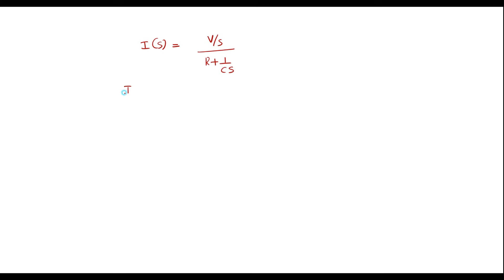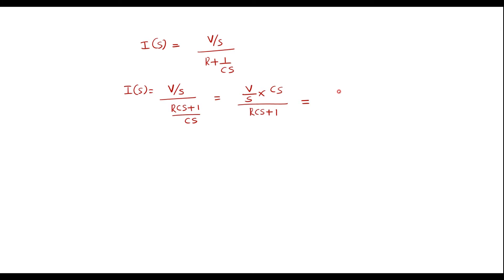Let me simplify this further. I of S is equal to V by S divided by — taking the LCM — R Cs plus 1 divided by Cs. The S and C terms will cancel. Taking RC out of the bracket gives R Cs plus 1 over RC. So C will cancel and we get V by R into 1 upon S plus 1 over RC.